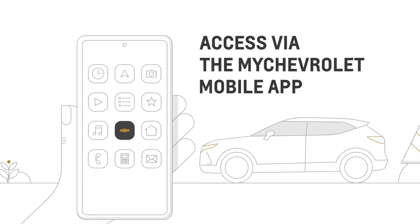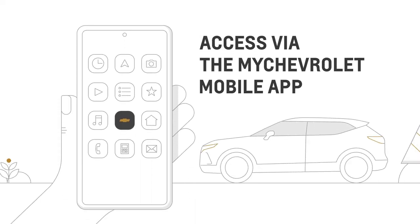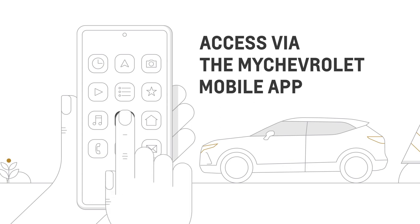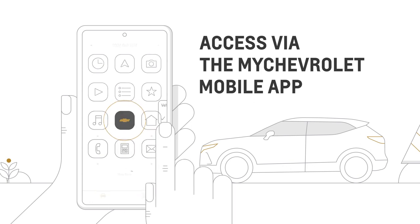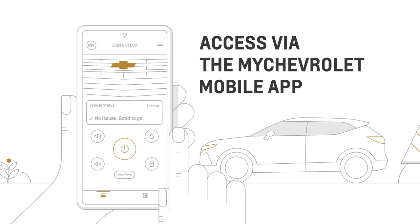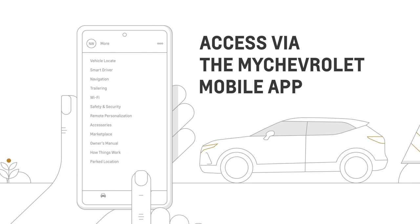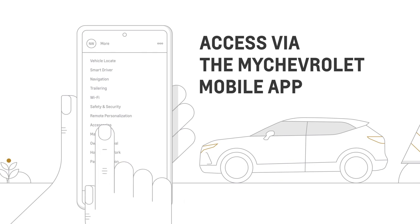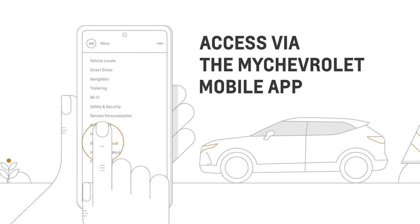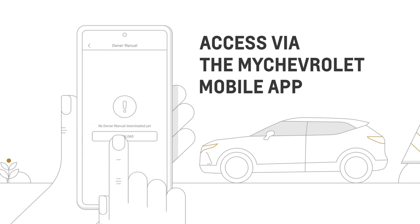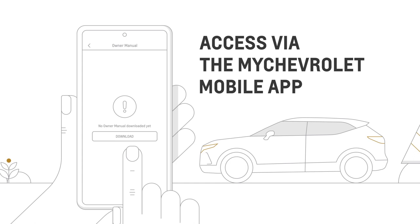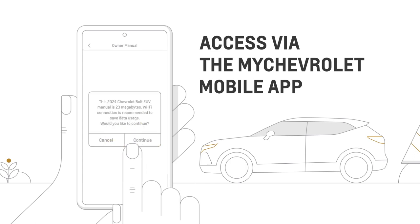To access your Owner Manual in the MyChevrolet mobile app, open the app on your phone. Click the More button on the bottom right, then select Owner Manual to explore all the information about your vehicle. The first time you do this, you'll be prompted to download the Owner Manual PDF.